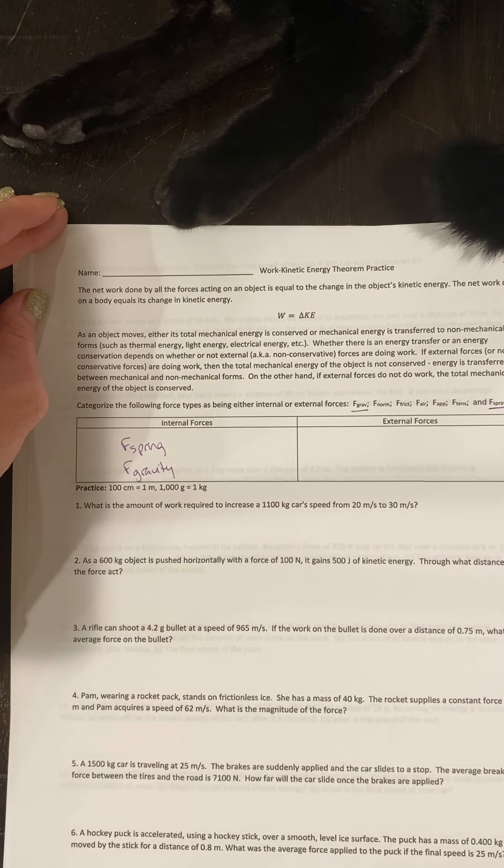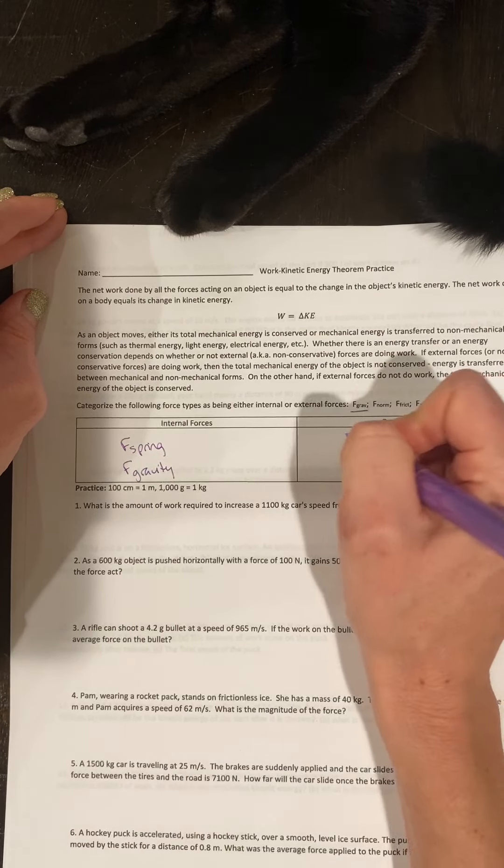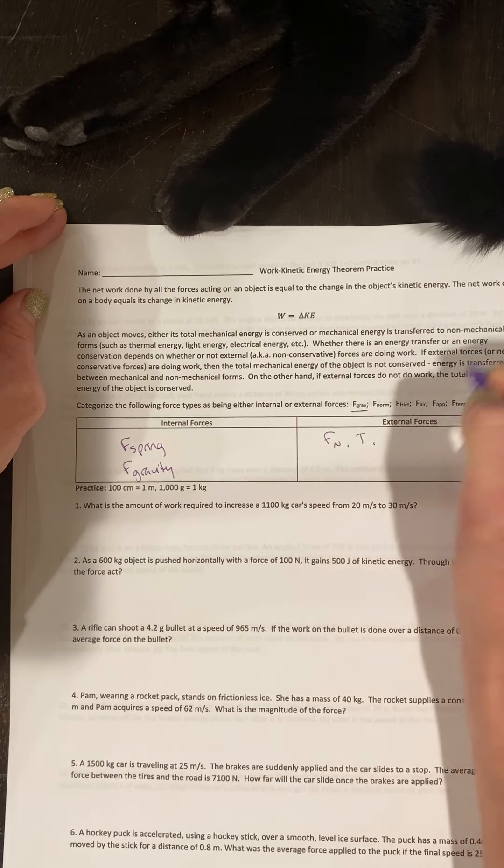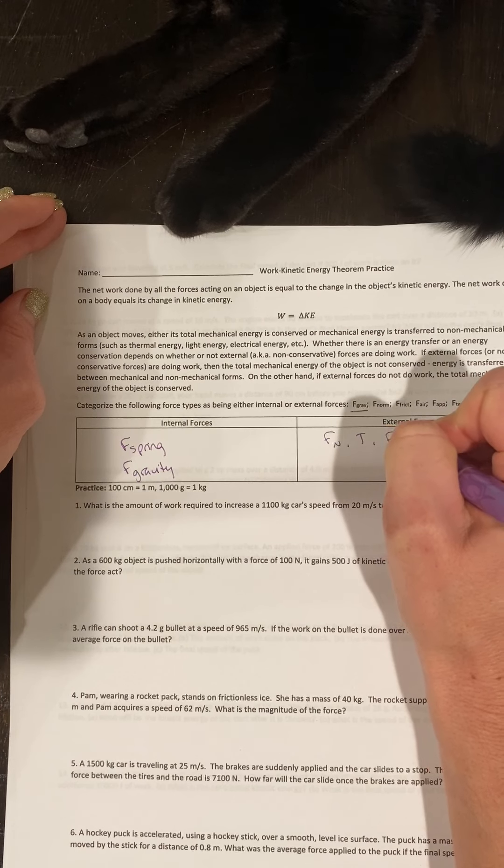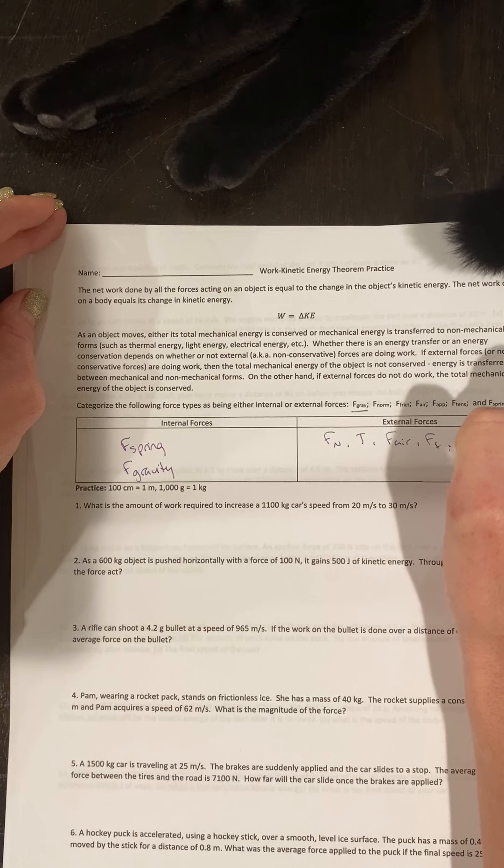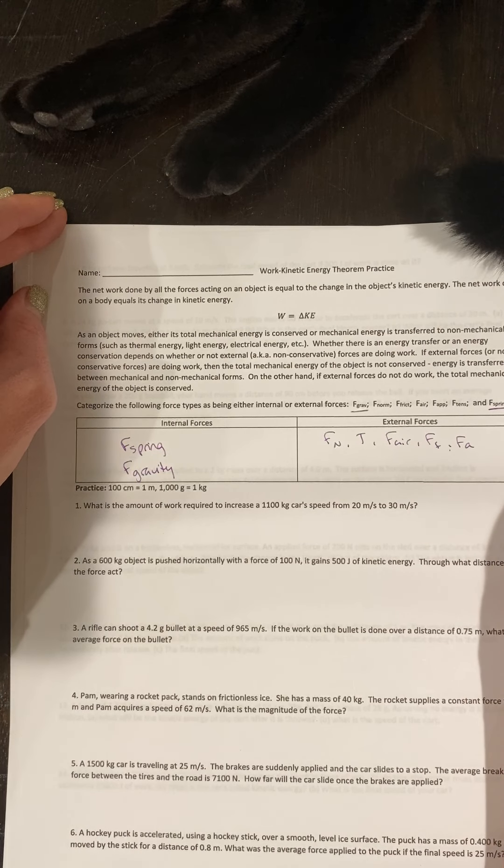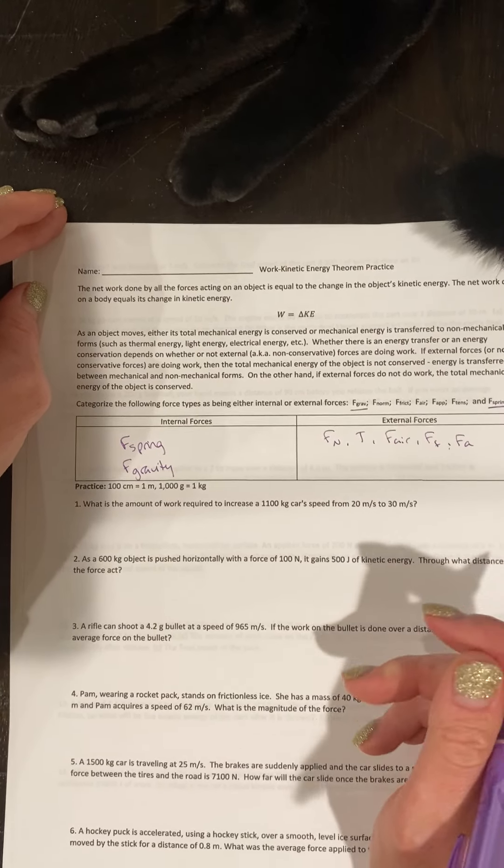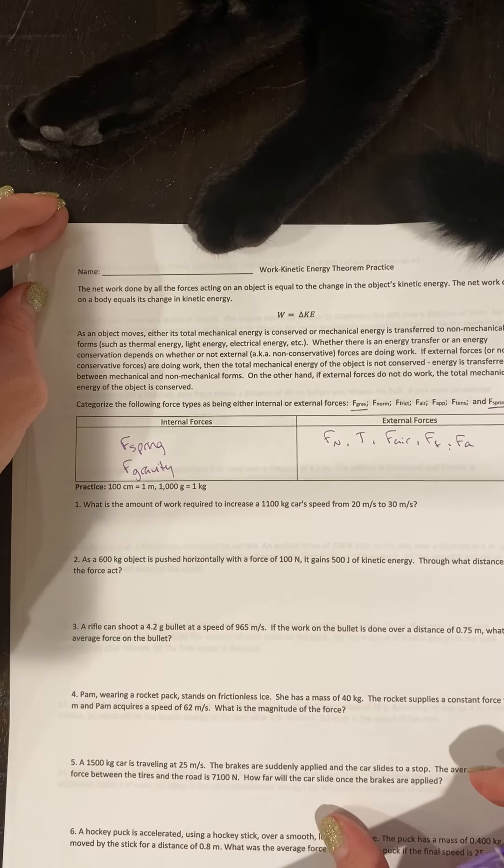Everything else is going to be an external force: your force normal, your tension, your air resistance, your frictional force, and your applied force. Remember, if you have a force in the same direction as your displacement, you have positive work being done. If you have force in the opposite direction of your displacement, you'll have negative work being done.